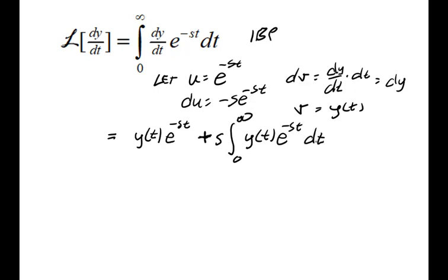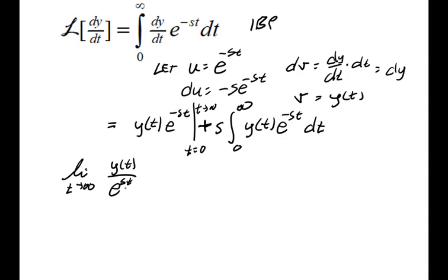All right, so when we evaluate, we need to evaluate this first part as t goes from 0 to infinity. So we kind of want to look at what happens to the limit as t goes to infinity of y of t over e to the st. And for most functions, e to the st is basically more powerful. It will outrace any function when you're taking the limits.